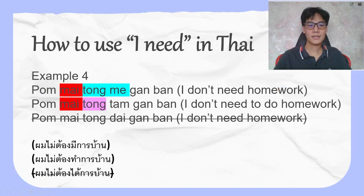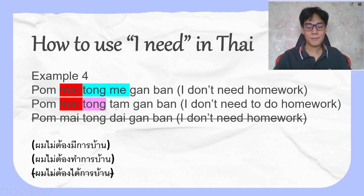Example four: ผมไม่ต้องมีการบ้าน means 'I don't need homework' or 'I don't need to have homework.'